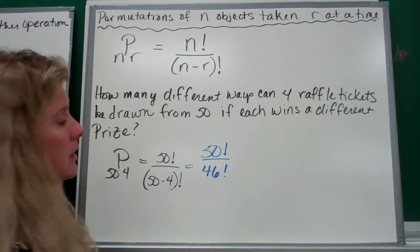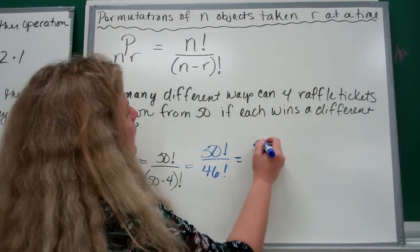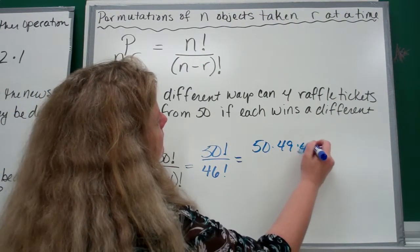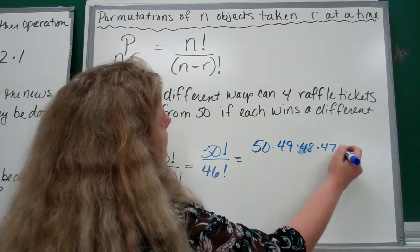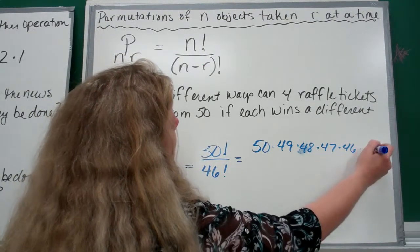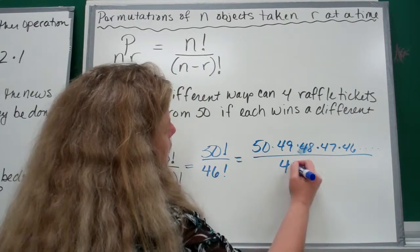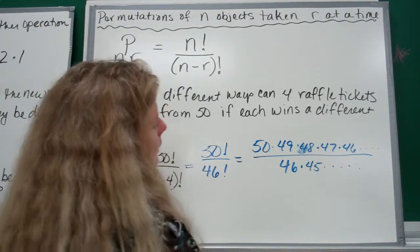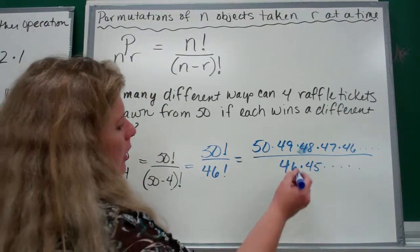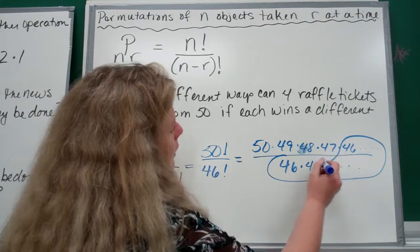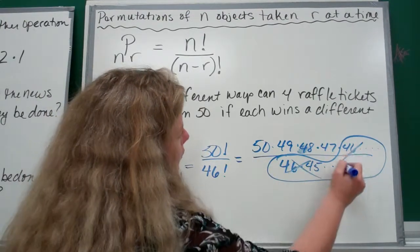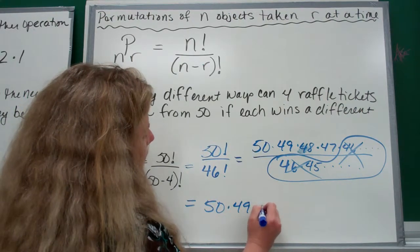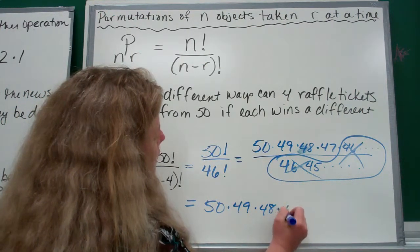Here's the really interesting part. It's 50 times 49 times 48 times 47 times 46, blah blah blah, and then the denominator is going to be 46 times 45, blah blah blah. Look what's going to happen here: all of these in the denominator are going to cancel out with all of those.